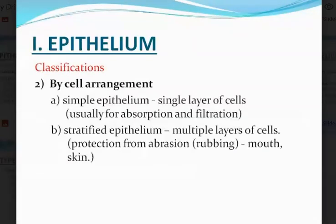The second classification is based on how the cells are arranged — cell arrangement. The first type is simple epithelium, made up of a single layer of cells, usually for absorption and filtration. The second type is stratified epithelium, made up of multiple layers of cells. It helps to protect the surface from abrasion, especially like the mouth and the skin, wherever you need more protection.